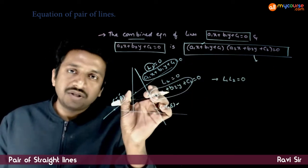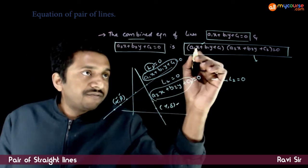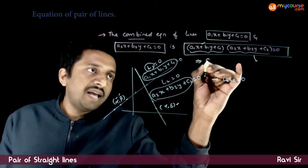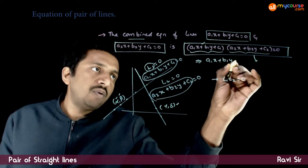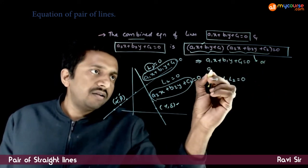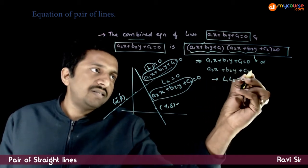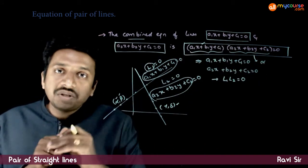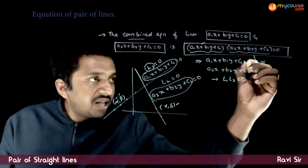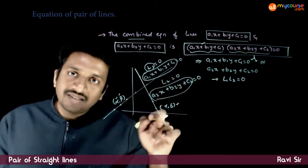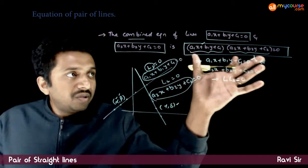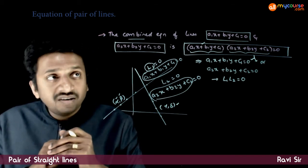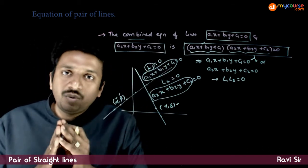Hence, this is the combined equation of this pair of lines. Also, if the product of two expressions is equal to 0, this implies either a1x + b1y + c1 = 0 or a2x + b2y + c2 = 0. That means, if this combined equation has to be equal to 0, the point has to satisfy either the first line or the second line. So this effectively is the combined equation of the two straight lines.